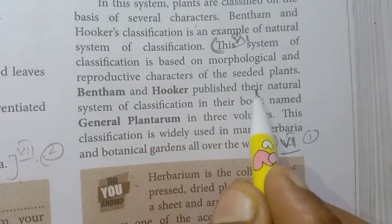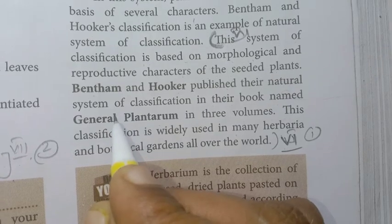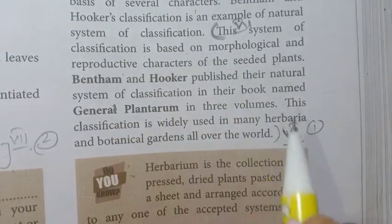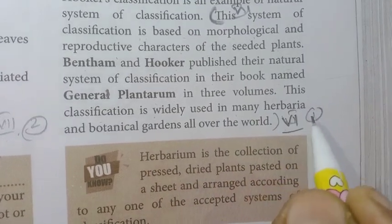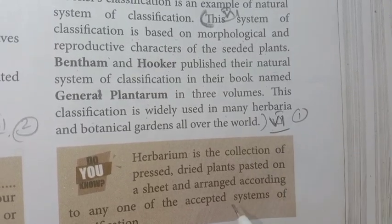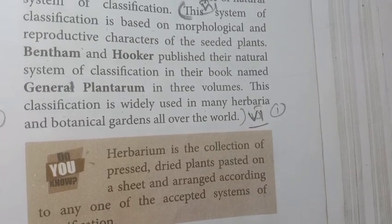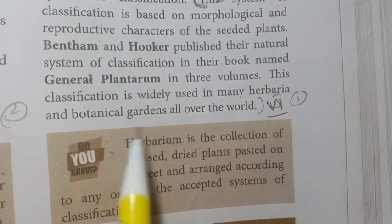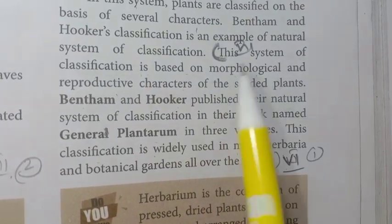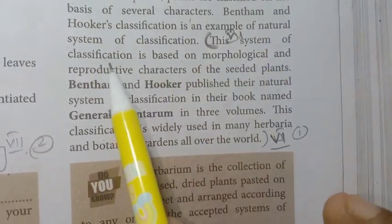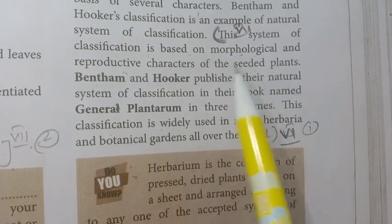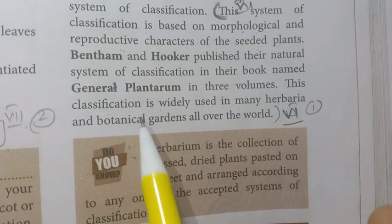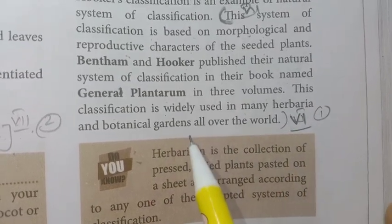Bentham and Hooker published their Natural System of Classification in their book named Genera Plantarum, published in 3 volumes. This classification is based on morphological and reproductive characters, and is used in many herbaria and botanical gardens all over the world. Those are the three points.